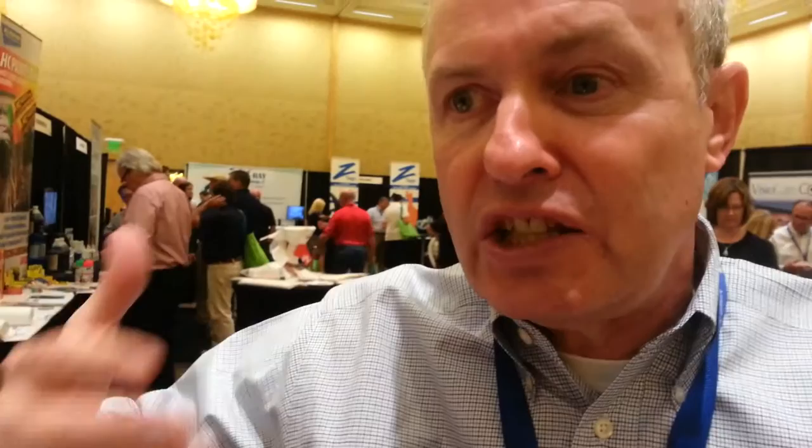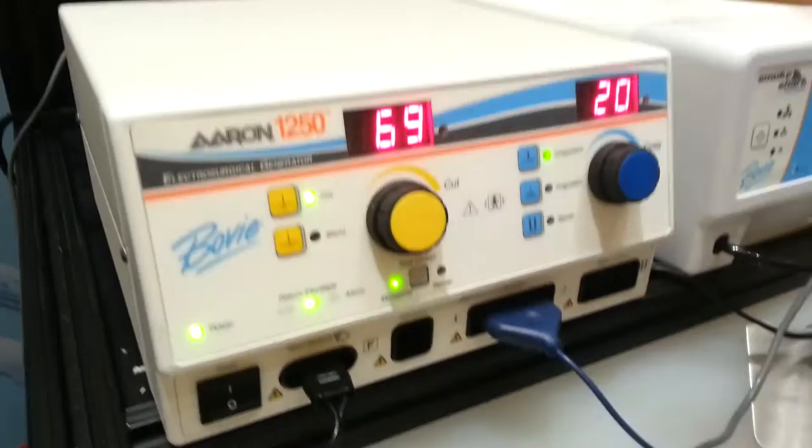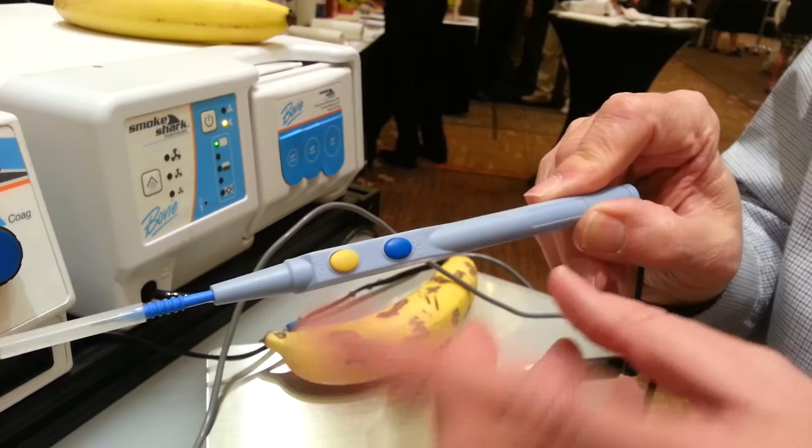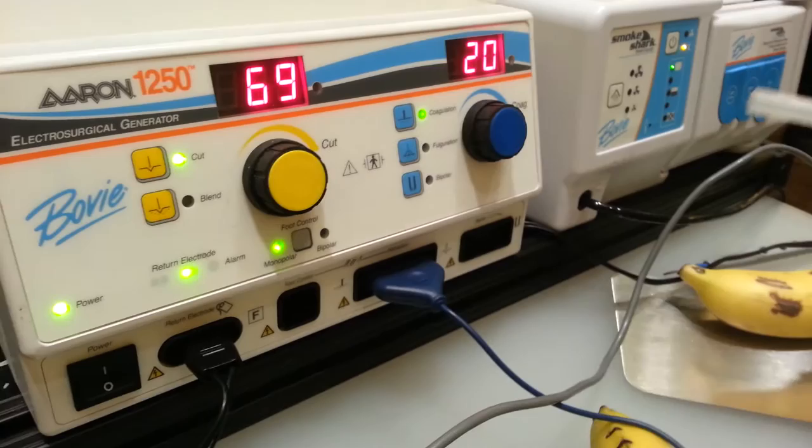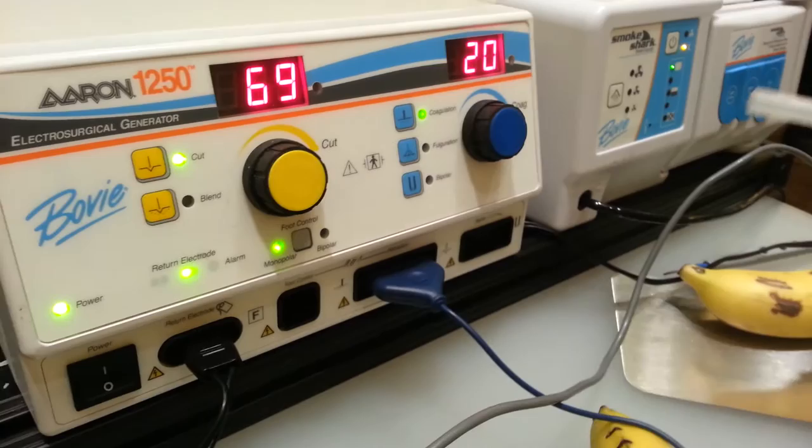If I'm in a sterile field, I have to have a technician switch it from cut to coag. Where on the 1250, my cut and my coag are right on the pencil, so I can go back and forth, and I don't need that technician to switch from cut to coag. So if I'm in a sterile field, I can basically handle all the different settings from the pencil versus doing it from the generator.